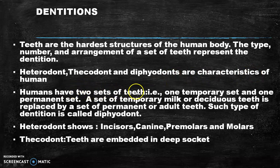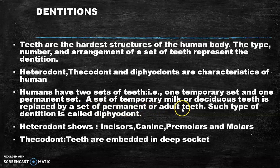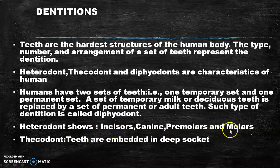We have two sets of teeth: one temporary set and one permanent set. The temporary set is otherwise called deciduous teeth, and it is replaced by a set of permanent or adult teeth. Such a condition of having two types of dentition is called diphodont. Heterodont refers to having different types of teeth, namely incisors, canine, premolars and molars. Thecodont means the teeth are embedded in deep sockets.